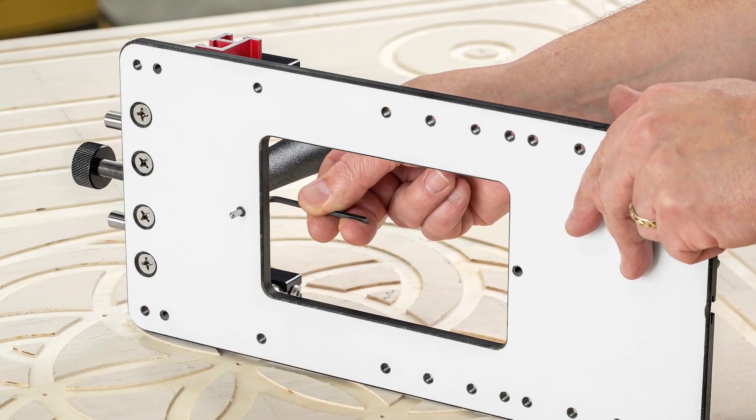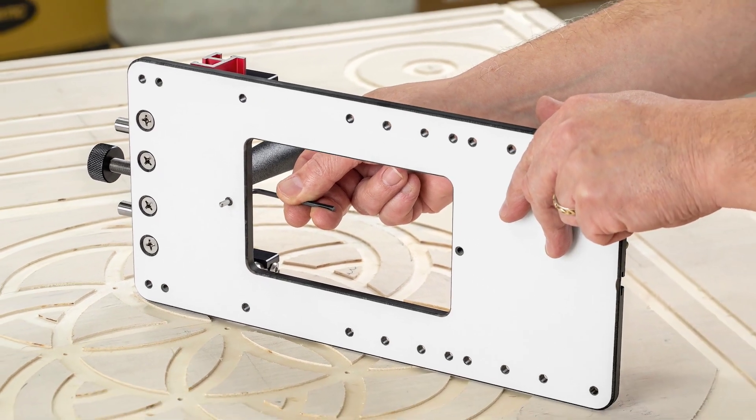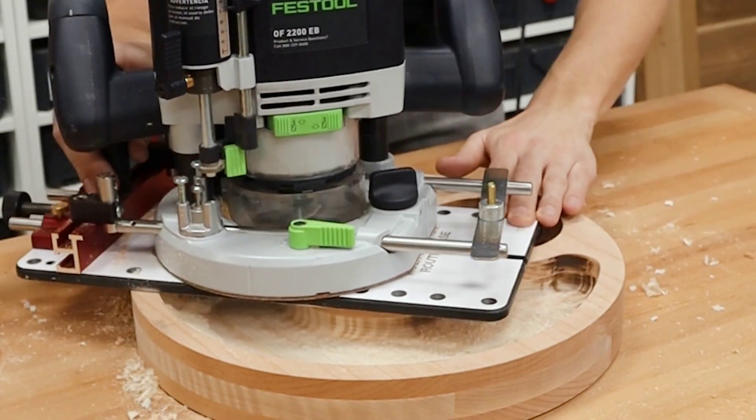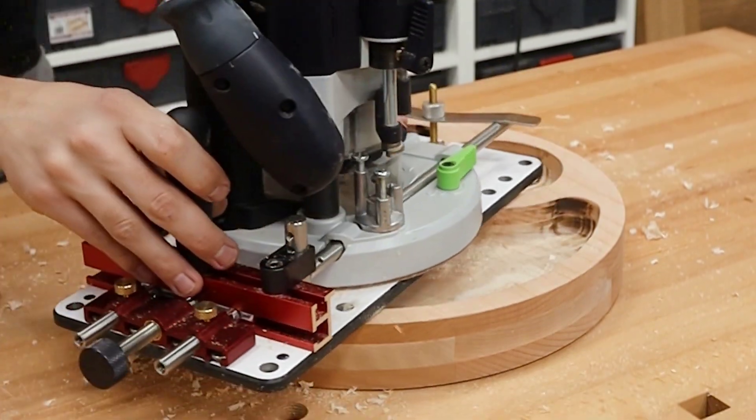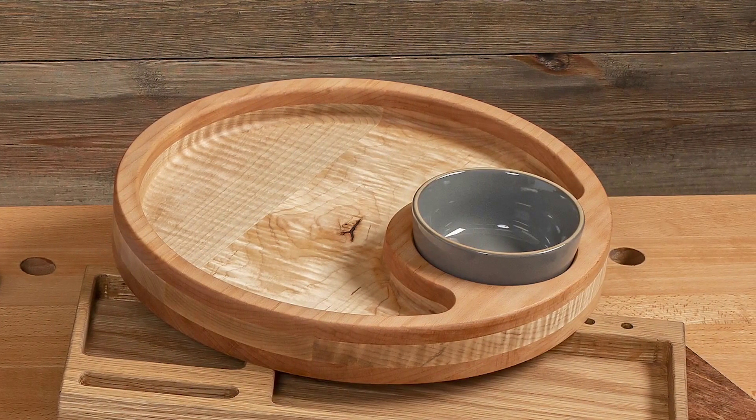For cutting arcs, you have options similar to the edge guide. The base has four different axis points that give you a range from 3¼ inches up to 8¼ inches. By combining different arcs and working with the support of the large base, projects like this chip and dip tray couldn't be simpler.